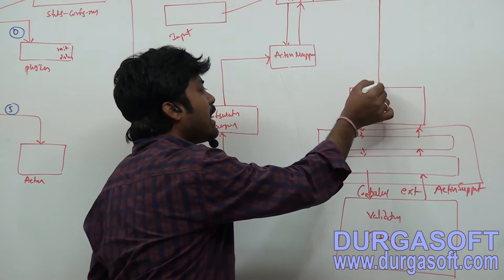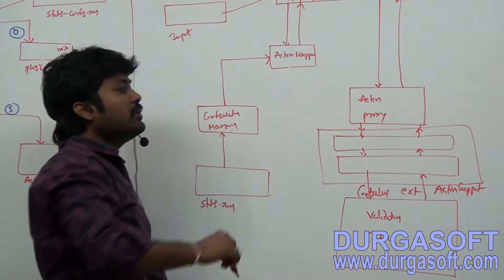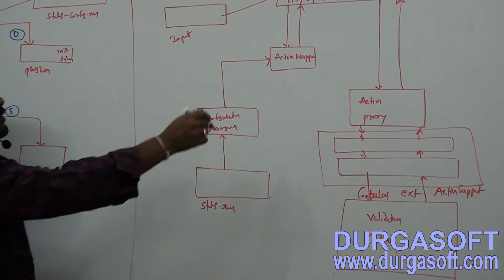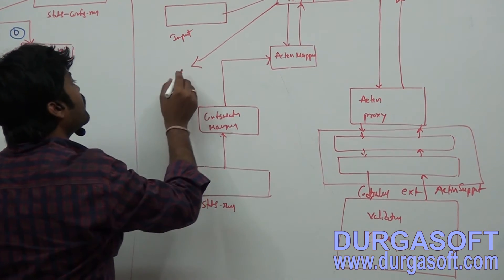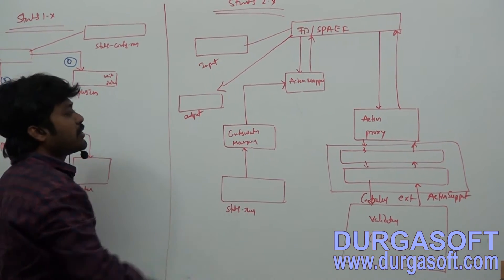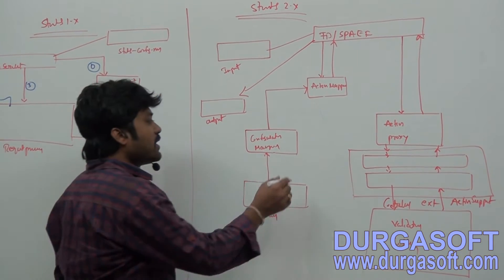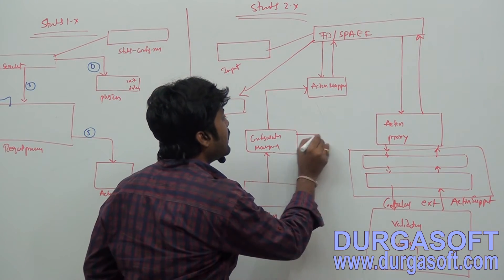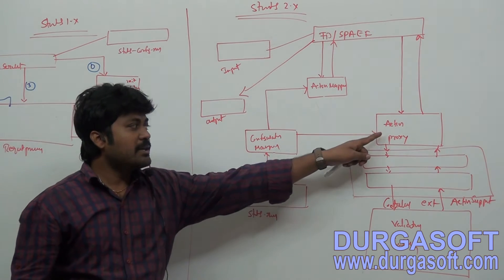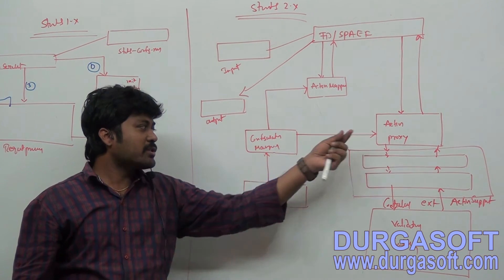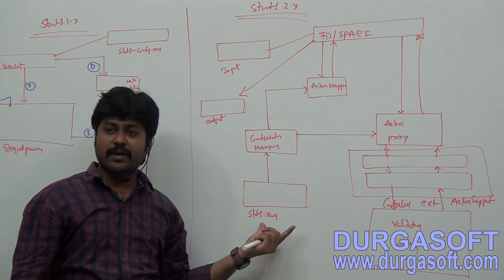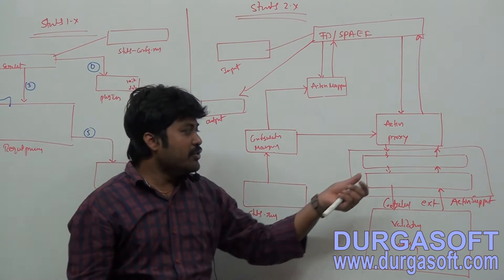After executing the controller, the response also goes back through the same way. ActionProxy takes the response and forwards it to the filter, and finally the filter forwards it as the output page. If ActionProxy requires any data from the XML file, it reads that from ConfigurationManager.